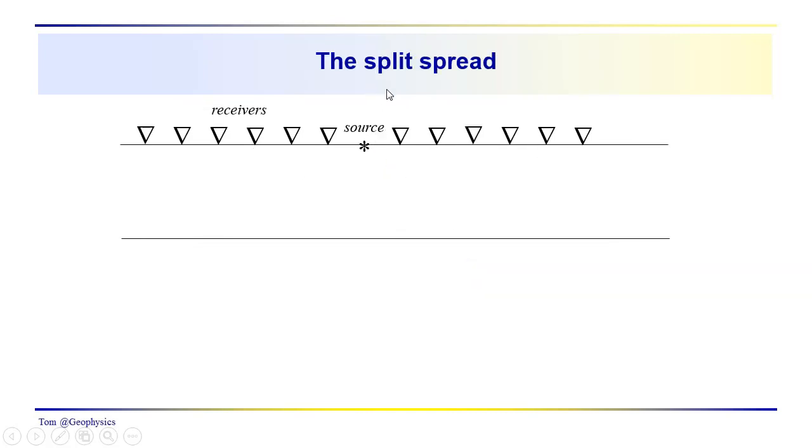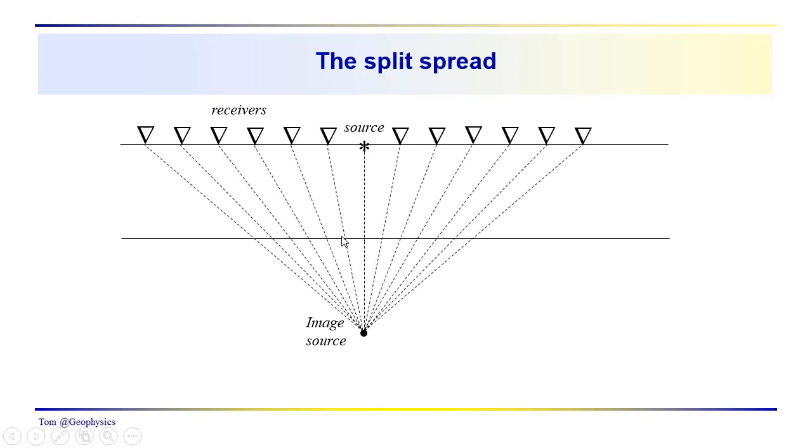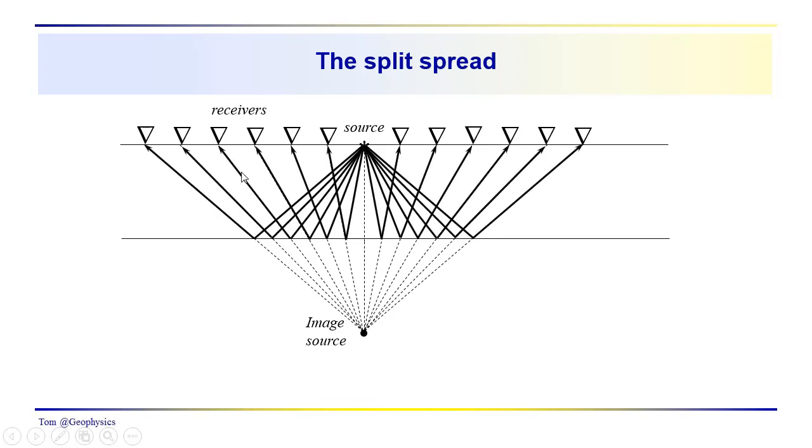And here we have what's referred to as a split spread arrangement. We've got the receivers on both ends on either side of the source, and thus the name split spread. We locate our image source again. We locate the image rays, and we then visualize the ray paths to each of these reflection points.